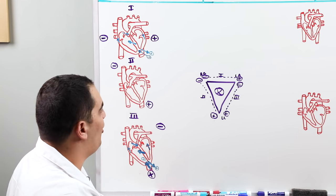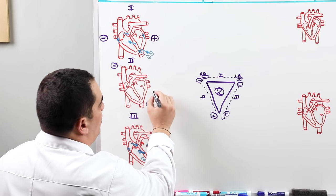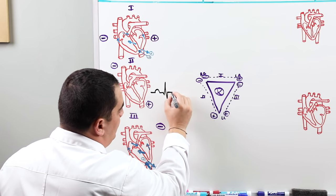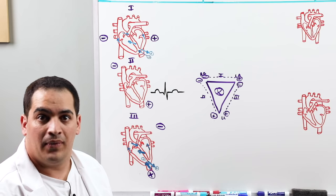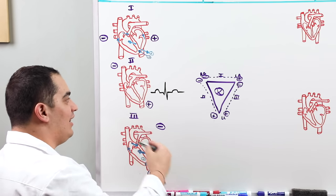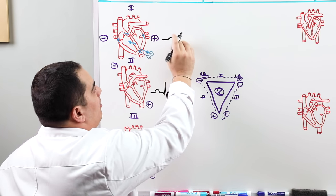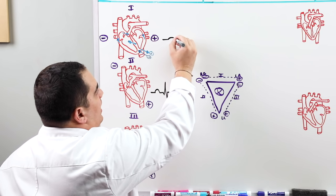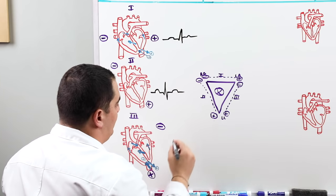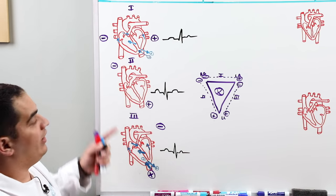We already know what lead two should look like. If you follow the same vector analysis for lead one and lead three, you get the same kind of waveform — upright P wave, PR segment, Q, R, S, ST segment, and upright T wave. Lead one, two, and three should all produce pretty much the same waveform. There may be slight variations due to axis differences, but for the most part they look the same.